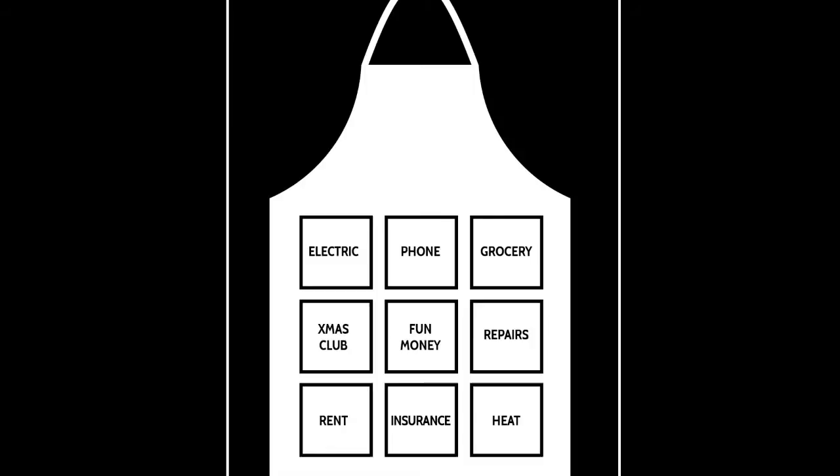You know, in the 1900s through the 1970s, people used this apron system. They would get their check from the factory, cash it at the bank, come home and had an apron on the back of a door with pockets for electric bill, phone bill, Christmas club, etc. They'd put all the money in there, and when it came time to pay each of the bills, they had the money to do that.